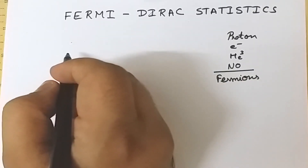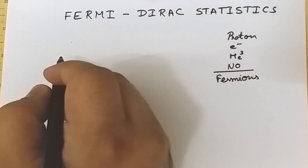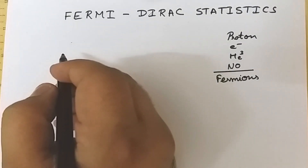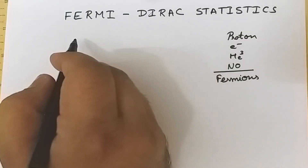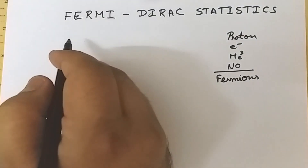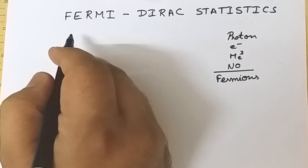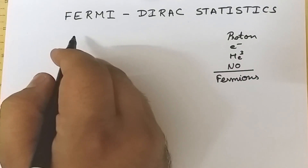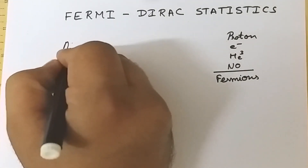In Bose-Einstein statistics, particles were indistinguishable but no restriction was placed on filling those energy levels. In Fermi-Dirac statistics, however, particles are also indistinguishable, but only a single particle can occupy a single energy level. This means particles follow Pauli's exclusion principle — in every energy level there is only one particle having half-integral spin.